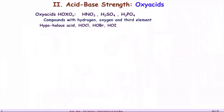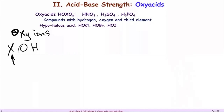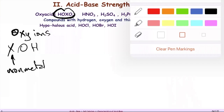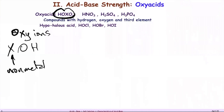Now let's look at oxy acids. Oxy acids contain oxygen, hydrogen, and a third element X, which is generally a non-metal. Examples of oxy acids include HNO₃ (nitric acid), sulfuric acid, and phosphoric acid — they all have oxygen, hydrogen, and a non-metal third element. Compounds of hydrogen, oxygen, and a third element are oxy acids.